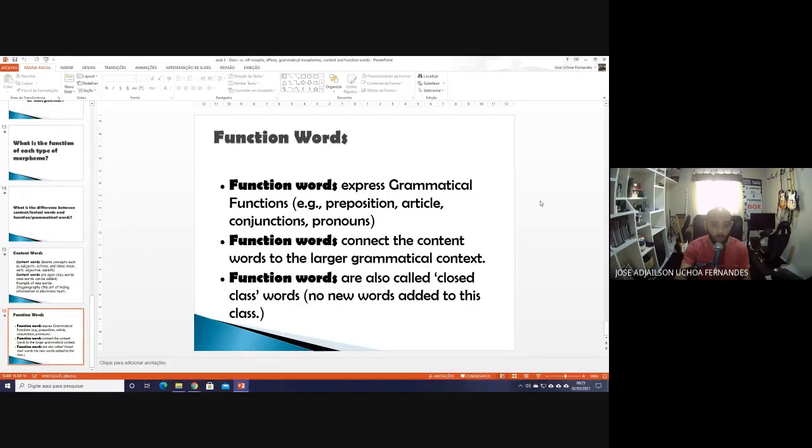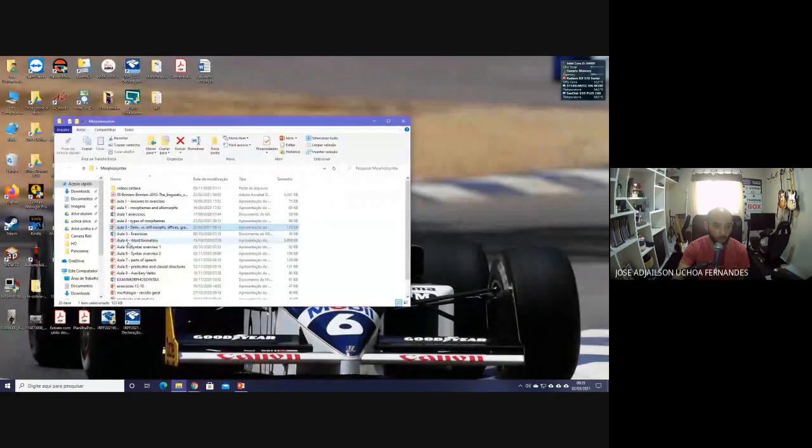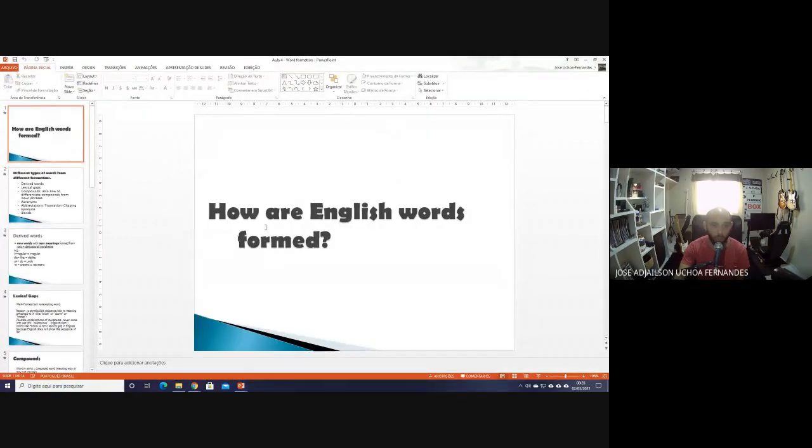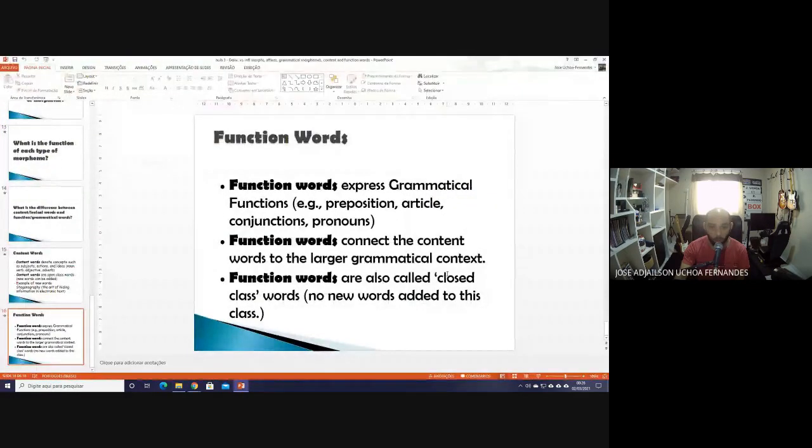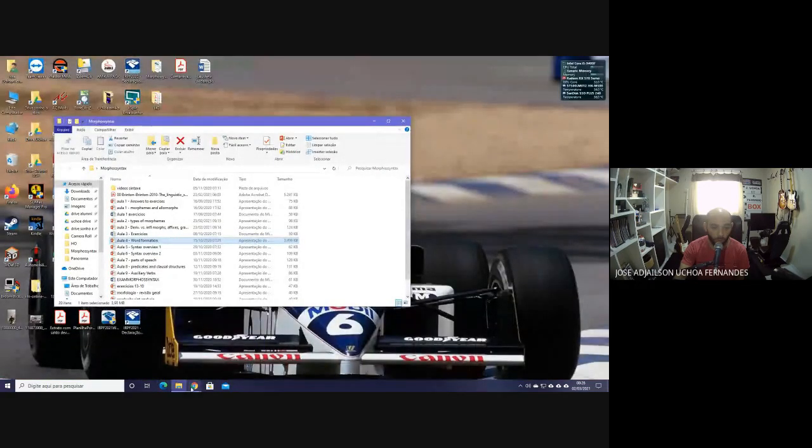So these are basically the types of morpheme. And next class, since we do not have discussion today, next class we are supposed to discuss the new topic, which is the process of word formation. So we are going to see how English words are formed, the different processes for word formation like prefixation, affixation, composition, blending, acronyms, and so on. But I'll leave this for next class because we were supposed to have a discussion and examples today. But no students came, so this is all for today. And I hope you are here with me by next class.